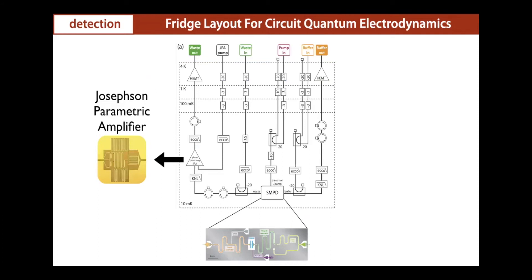Keep in mind that this is a full circuit QED experiment. For this to work well, we also need a Josephson parametric amplifier to efficiently read out the state of our qubit, and many lines in the fridge to perform this experiment correctly. I believe this could be simplified a bit, but not much. That's the circuit layout to make this experiment work.